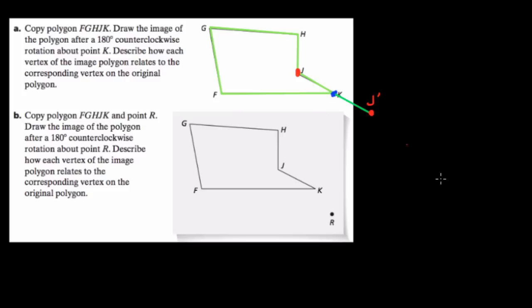And if that's confusing you still, what I would do is then draw a circle with the center at K, going through J and J prime. And I draw these circles because it helps me keep track of the rotational path of each point. So J goes 180 degrees along this circle to reach J prime.